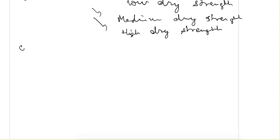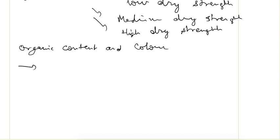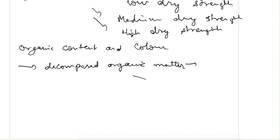For organic content, we check the odour and color. If the soil is of organic origin, it gives the odour of decomposed organic matter, and when heated this odour intensifies. If it is of organic nature, the color will also be dark.